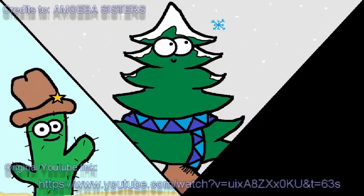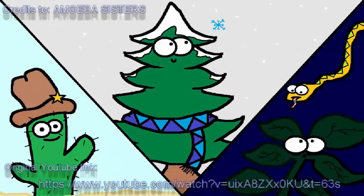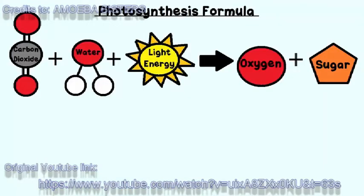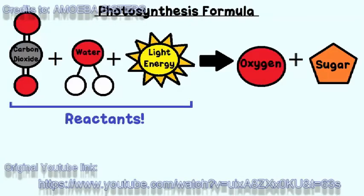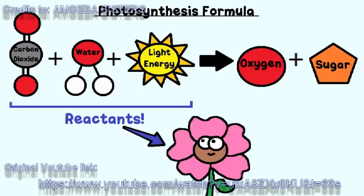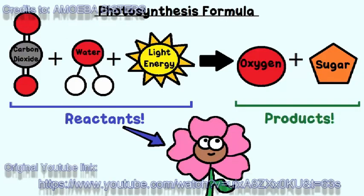Plants have adaptations to make them able to carry out photosynthesis in a variety of environments. Here is the formula for photosynthesis. On the left side of the formula, you will find the reactants — that means these are the inputs; the plant has to have these in order to do photosynthesis. On the right side of the formula, you will see the products — that means those are the items that are produced by the plant, the outputs.